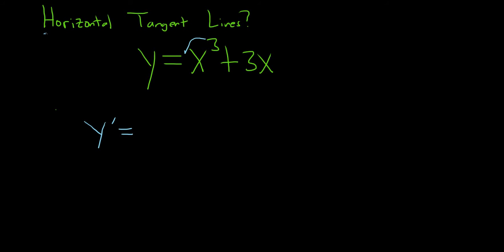So here we take the derivative using the power rule. So we'll get 3x squared plus 3. And we set this equal to 0.